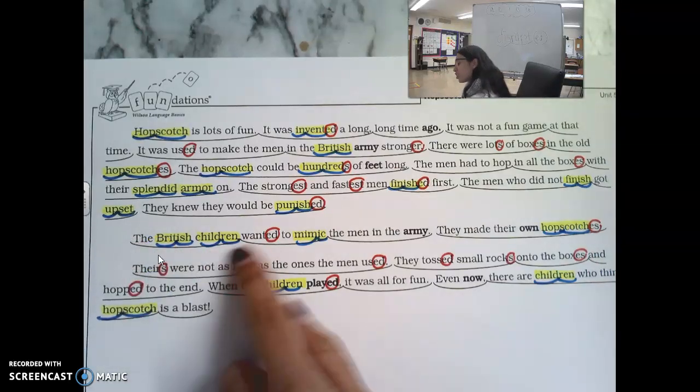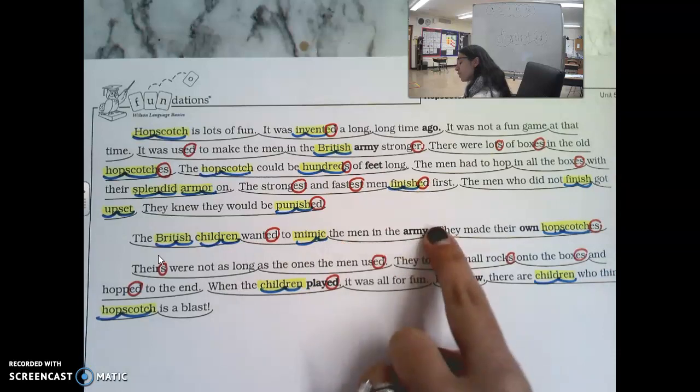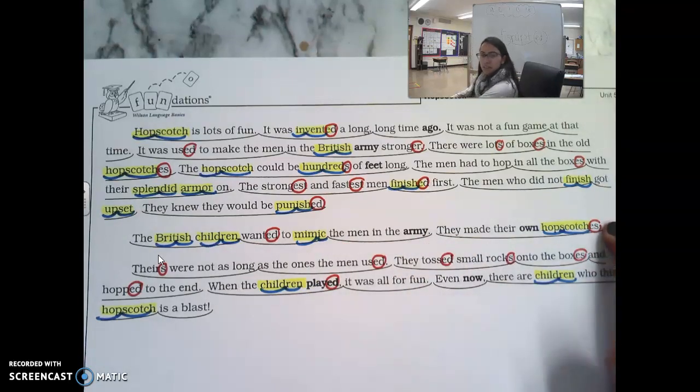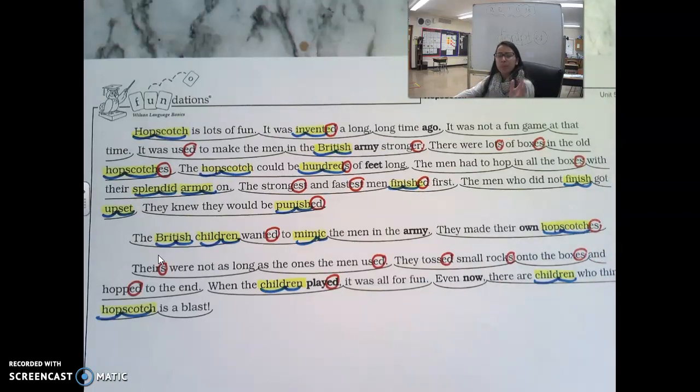The next paragraph says, The British children wanted to mimic the men in the army. They made their own hopscotches. Let's think. The British children wanted to mimic the men in the army. They made their own hopscotches. I wonder what the word mimic means. The British children wanted to blank the men in the army. They made their own hopscotches. Well, I almost think if they made their own hopscotches, they were copying the British army guys. So maybe mimic means to copy. Yeah, that's what it means. Mimic means to copy. Wow, I read the sentence and I thought about what that word might mean. So the British children wanted to copy, wanted to mimic the men in the army and made their own. Interesting.